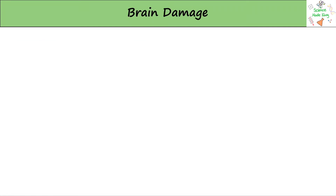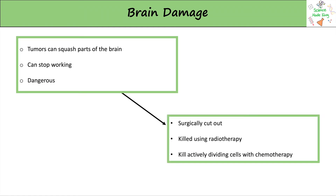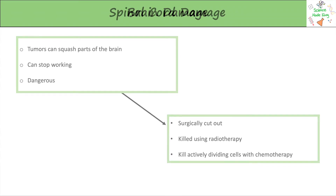The brain is such an important part of the body, so if it is damaged it needs immediate treatment. Tumours can squash parts of the brain, making them stop working. This can be really dangerous, so the tumour either needs to be cut out or cured with radiotherapy or chemotherapy.